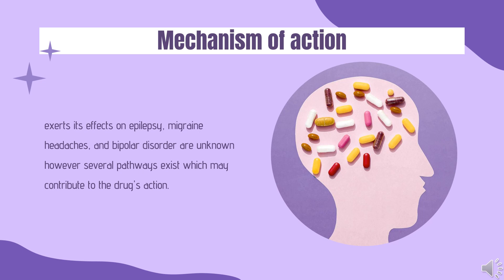It has also been suggested that valproate impacts the extracellular signal-related kinase (ERK) pathway. These effects appear to be dependent on mitogen-activated protein kinase (MEK) and result in the phosphorylation of ERK1/2. This activation increases expression of several downstream targets, including ELK1 with subsequent increases in c-FOS, growth cone-associated protein 43 (which contributes to neuroplasticity), B-cell lymphoma/leukemia-2 (an apoptotic protein), and brain-derived neurotrophic factor (BDNF), which is involved in neuroplasticity and growth. Increased neurogenesis and neurite growth due to valproate are attributed to this pathway. An additional downstream effect of increased BDNF expression is an increase of GABA receptors, which contributes further to increased GABAergic activity.